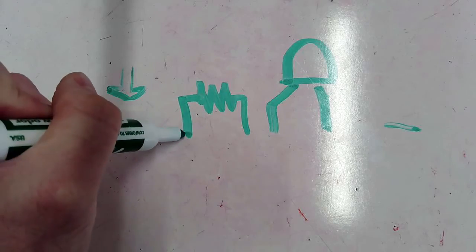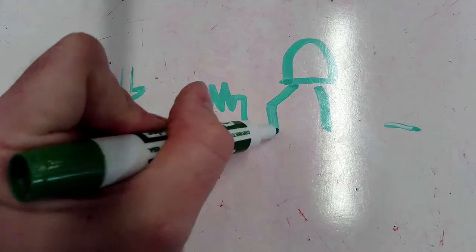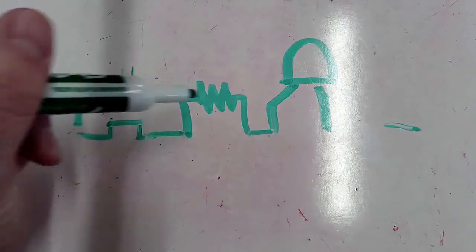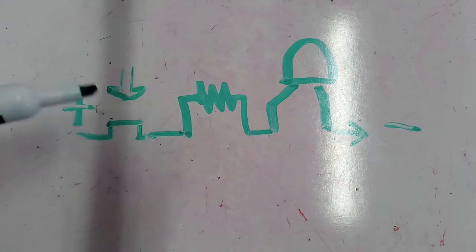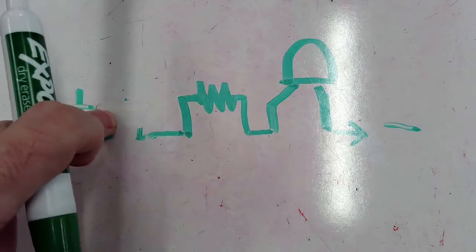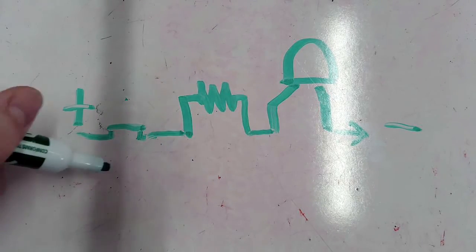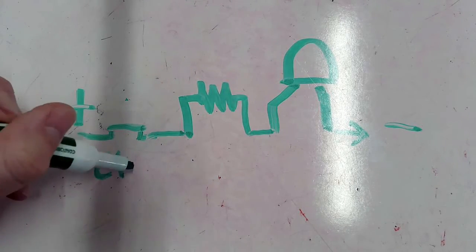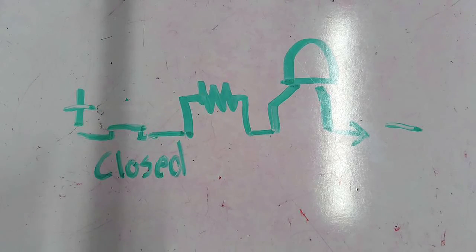When I push down on the top of the button, I push that conductor onto the other conductors, and then the current has a place to go. It can go through the resistor, into the LED, and out toward the negative. Now there's a complete path — that's called a closed state.